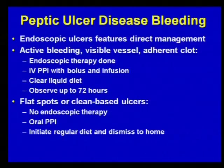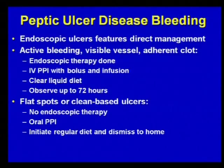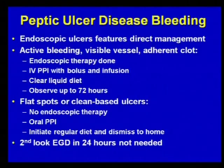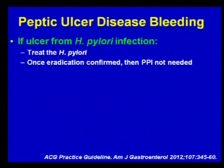Once we do an endoscopy, endoscopic features help us decide what to do. If we see active bleeding from the ulcer base, a visible vessel, or an adherent clot, the guidelines recommend applying endoscopic therapy, IV PPI bolus with continued infusion, a clear liquid diet, and observation up to 72 hours given the high risk of re-bleeding. However, patients with a flat pigmented spot or a clean-based ulcer — as this patient had — need no endoscopic therapy, can be switched immediately to oral PPI, started on a regular diet, and dismissed to home.